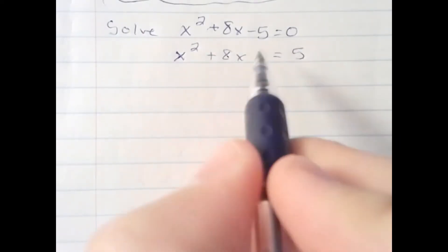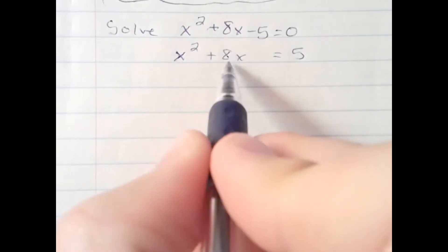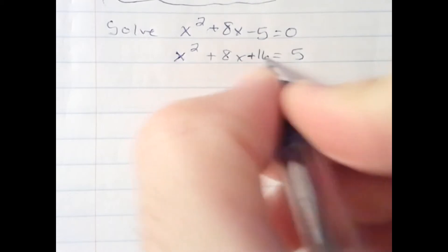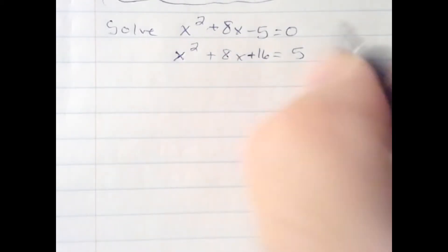And then I'm going to leave a space here, and what I do is I take half of 8, which is 4, and then square it, plus 16. Keep the equations balanced. I need to add 16 to both sides over here as well.